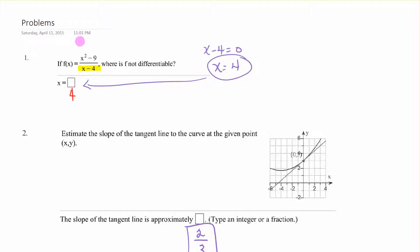f(x) = (x² - 9)/(x - 4). Where is it not differentiable? It would be not differentiable where there's a vertical tangent, vertical line. If we take this bottom, set it equal to 0, we get that there's a vertical asymptote boundary at x = 4, and that would be the one place that would not be differentiable.